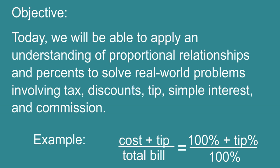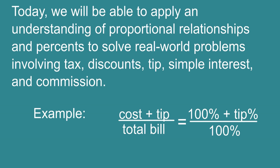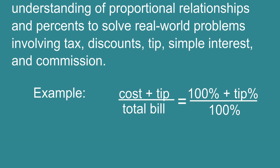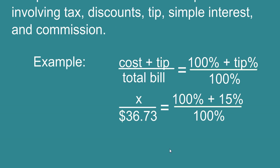First we see our example here and this is just how we could set up a proportion to find the total cost after you leave a tip. You could set up the proportion, your cost after the tip over the total cost of the meal, $36.73 equals 100% plus the 15% tip.